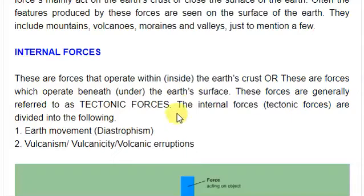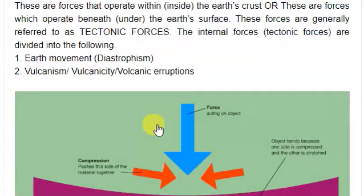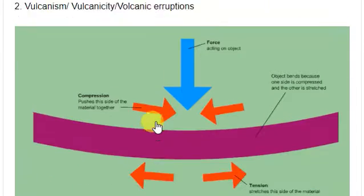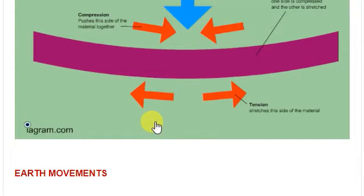The internal forces, or tectonic forces, are divided into two categories. First, we have diastrophic movement, and second, we have vulcanism — also called volcanicity or volcanic eruption. So we categorize the internal or tectonic forces into these two major categories. This diagram here shows different forces acting on objects.